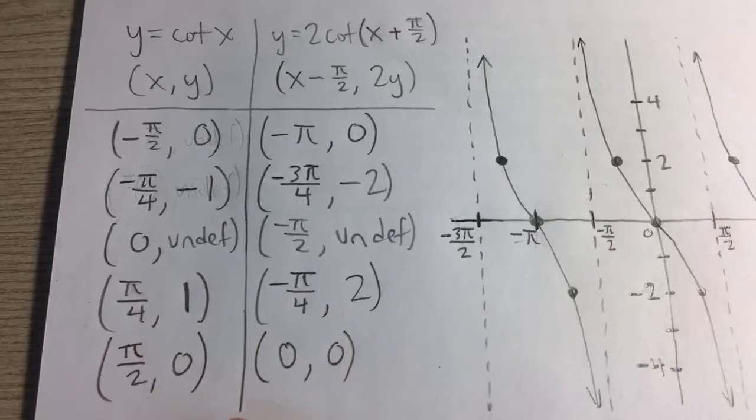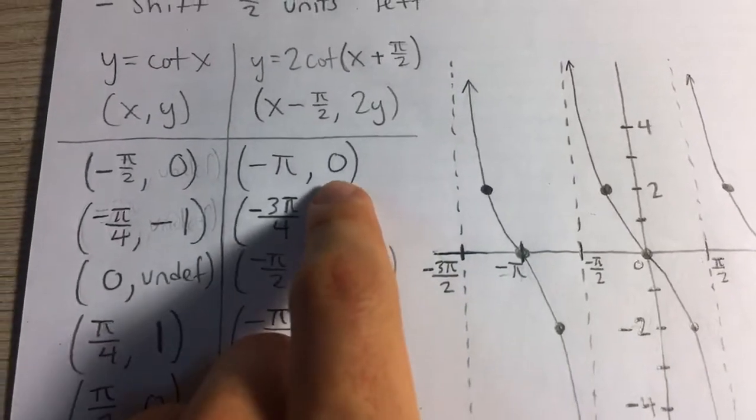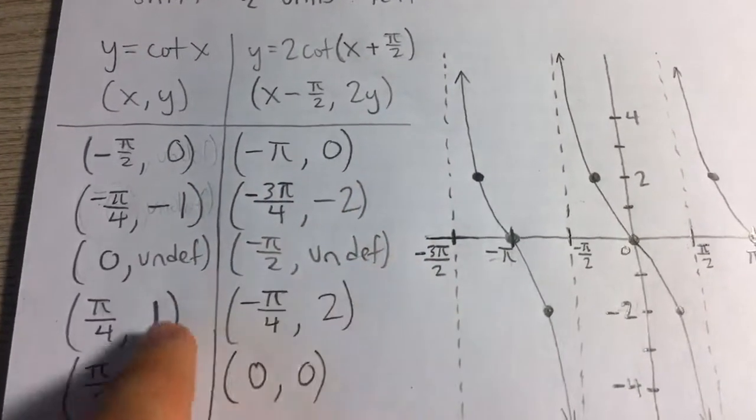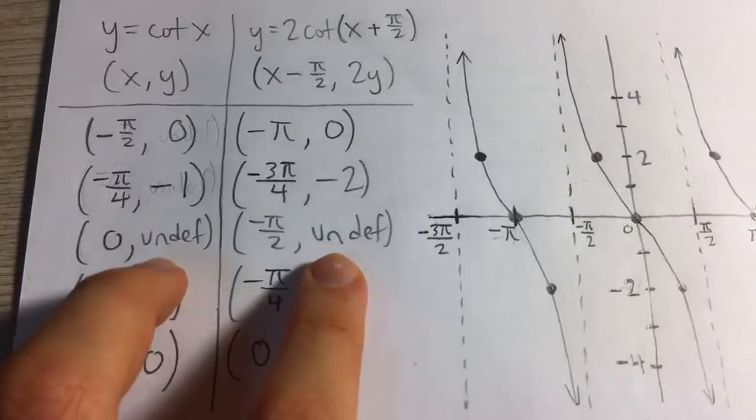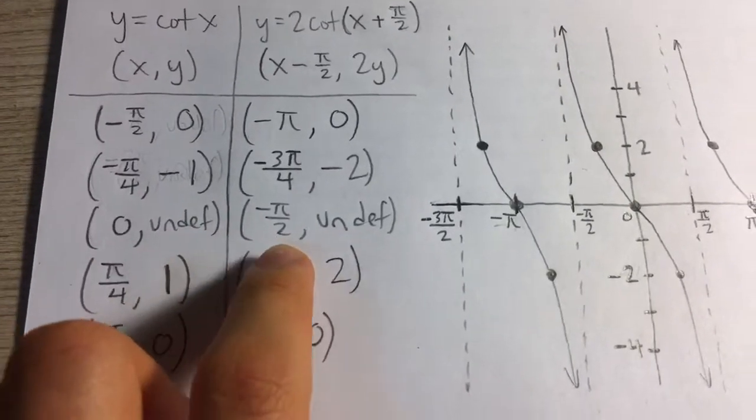over 2 from each x coordinate as you can see here, and all the y coordinates I multiplied by 2. And you can see we have an asymptote at negative pi over 2 on the new function.